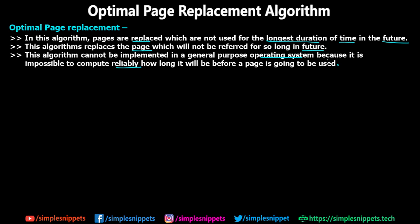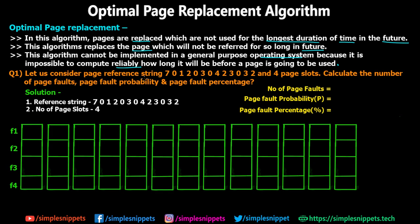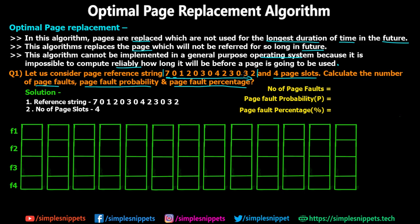Using this concept we can solve a basic numerical, so let's see one. Consider a page reference string starting from 7, 0, 1, 2, 0, 3, 0, 4, 2, 3, 0, 3, 2 — these are the page names requested by the CPU in this order. We have four page slots in the main memory RAM, so four frames are available. Frame size and page size are the same. We need to calculate the number of page faults, page fault probability, and page fault percentage.